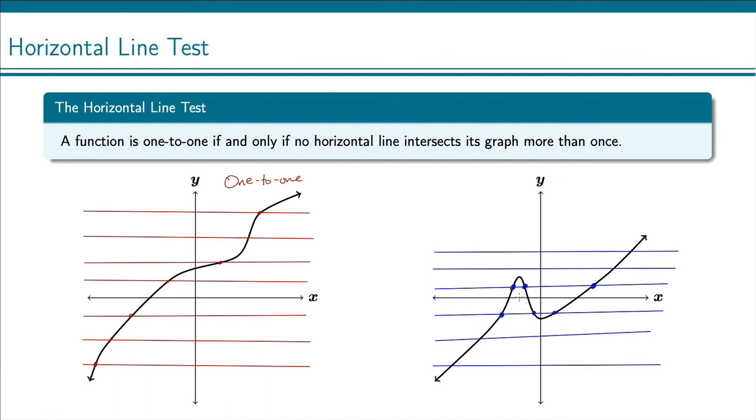Okay, so because you have a horizontal line that crosses more than once, this is not one-to-one by the horizontal line test.